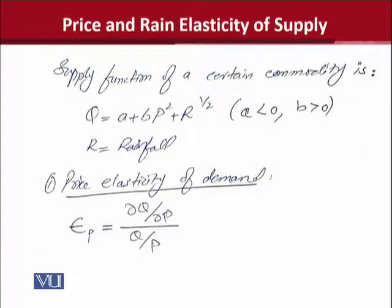You can see that we have an interesting sort of supply function and this positive sign is showing that price ke saath is quantity ka positive relationship. So even if we don't write S, it doesn't matter - we know that this is a supply function. Interestingly, P ki power jo hai wo two hai, it's a quadratic function, it's a non-linear function and the most noticeable thing is the inclusion of R which is rainfall. Rainfall ka bhi hum ne is supply function mein add kia and you can see that rainfall is positively associated with the supply.